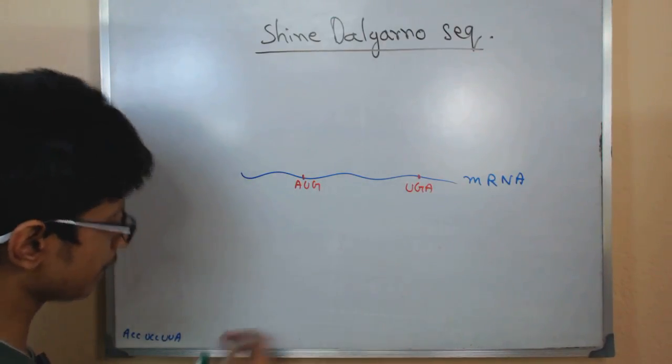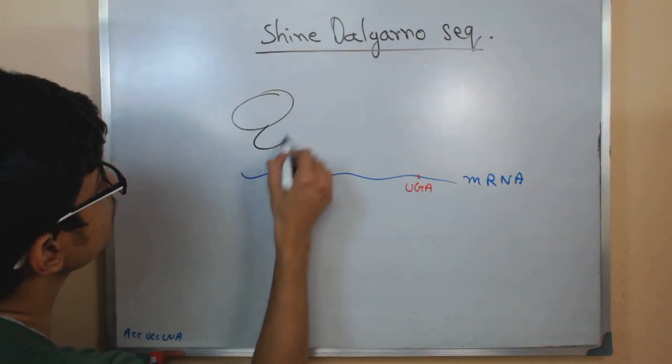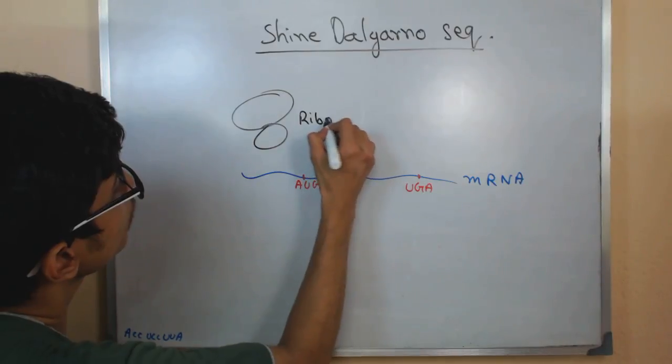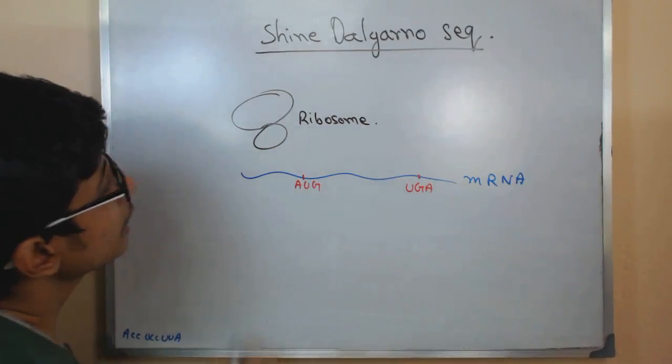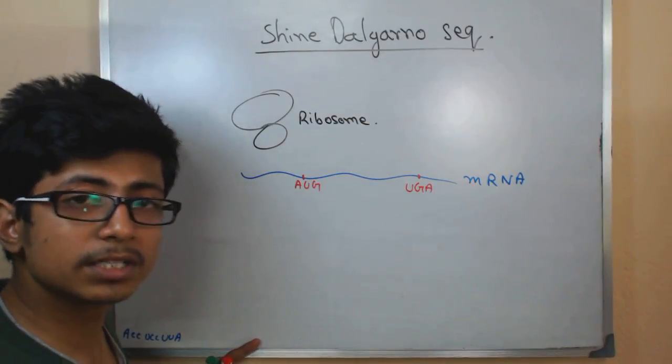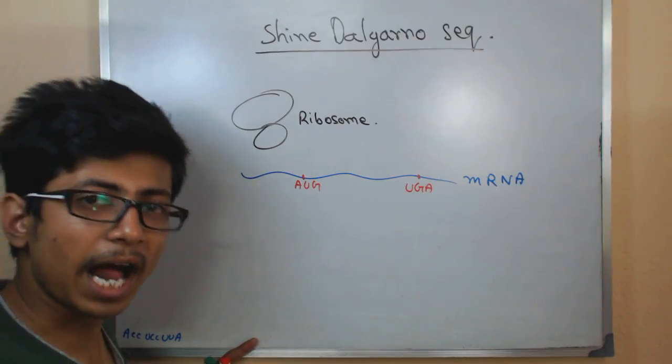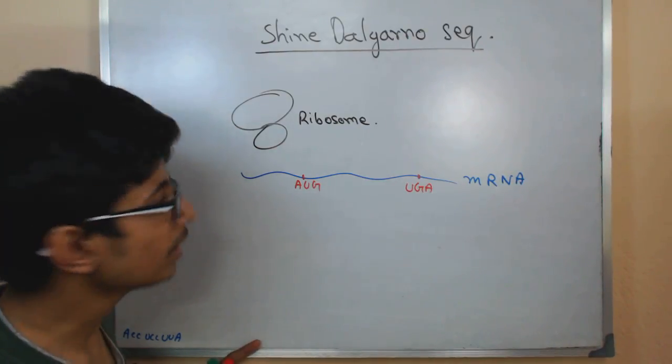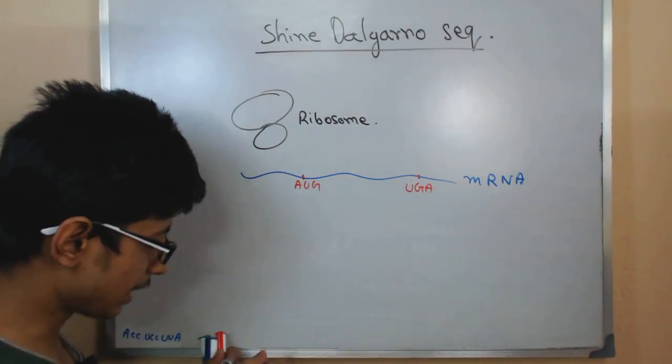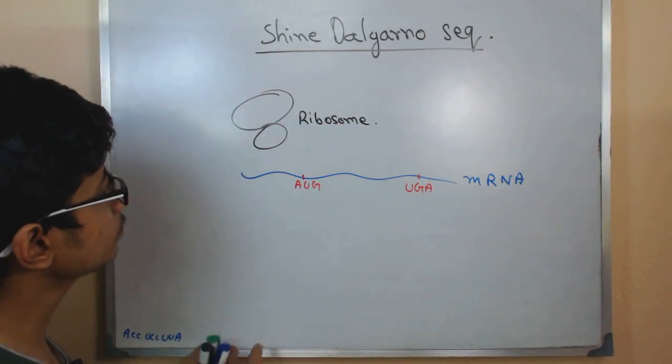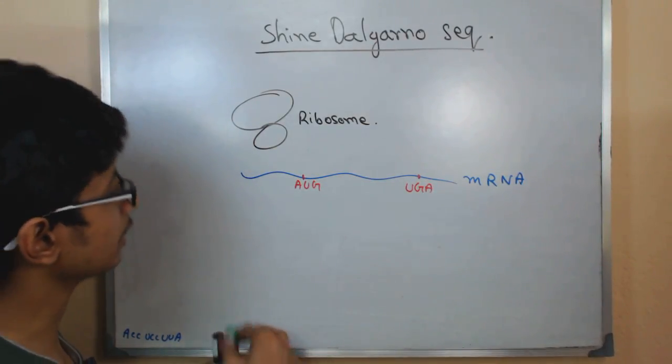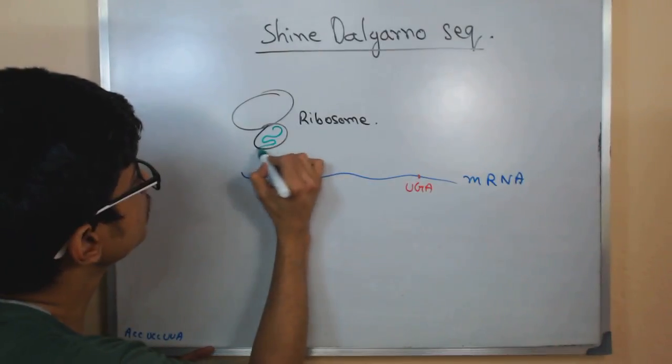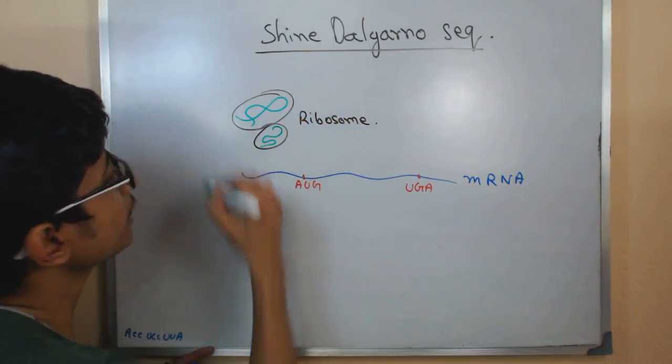So ribosome at the very beginning, let's draw the ribosome. Ribosome is present. Ribosome is mostly consisting of two things: one is rRNA and proteins, ribonuclear proteins. So the rRNA that is present in the ribosome, let us draw it with a green color. Let's say this is the rRNA. Different rRNAs are there.